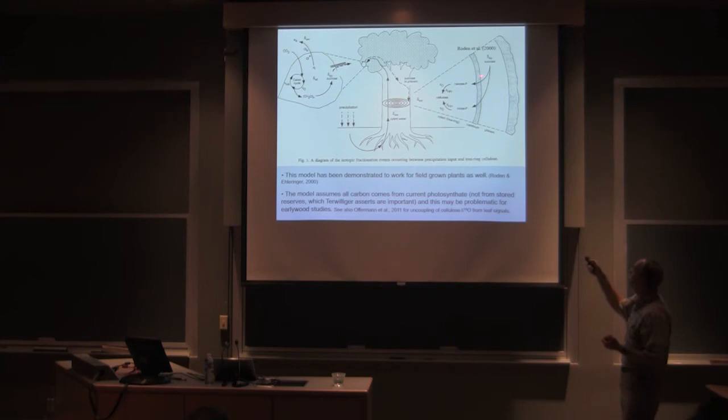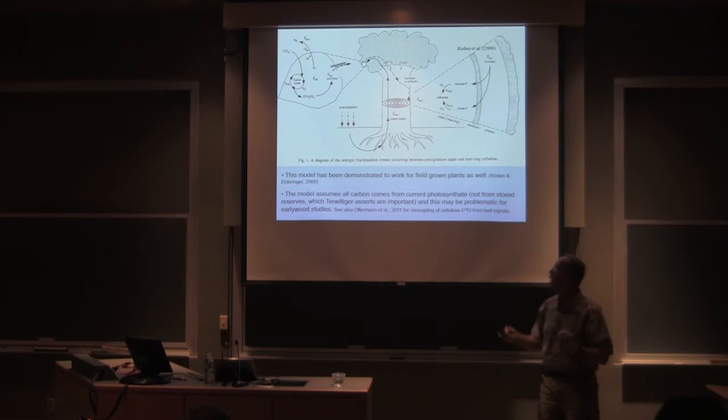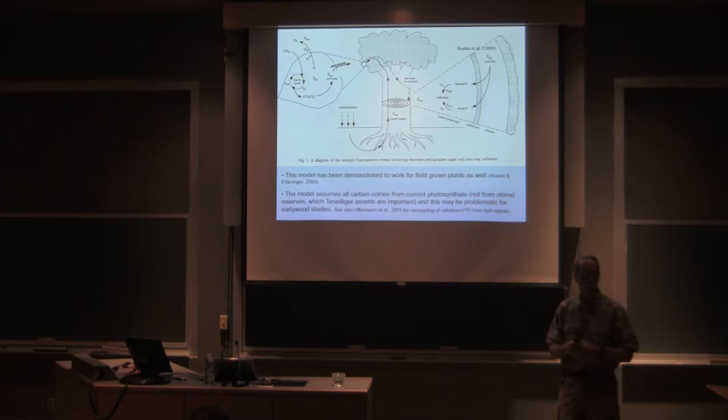This is now the heterotrophic fractionation. The heterotrophic fractionation is going from sucrose to cellulose, but you're in a different medium water. You're no longer in leaf water. You're now in xylem water where you're doing that exchange. So that's sort of the way we do it.